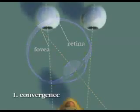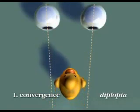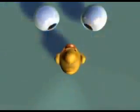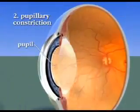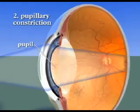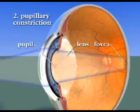If the eyes do not converge appropriately, diplopia, or double vision, occurs. The pupil must constrict to restrict the entry of light rays diverging from a near object, since diverging rays cannot be bent enough by the periphery of the lens to make them fall on the fovea. If the pupil were to remain dilated, the image would be blurred.